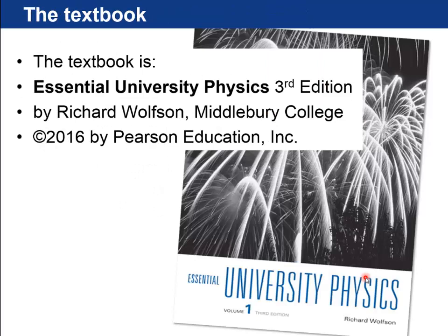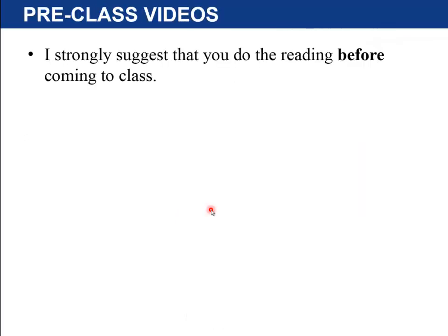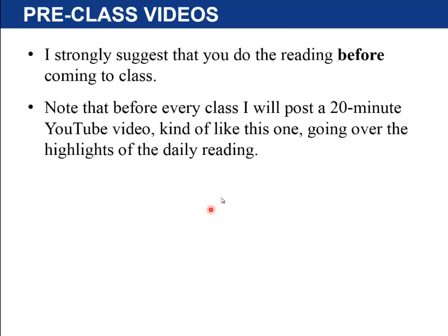This is the textbook, Essential University Physics, 3rd edition. It's required — you should go and buy it at the bookstore. It's copyright 2016. I don't know how that could be, since that's the future. But anyway, I strongly suggest that you do the reading that's assigned on Portal before coming to class.